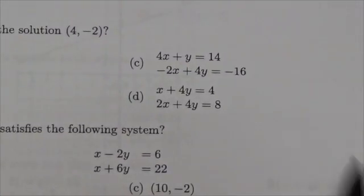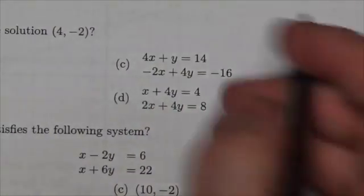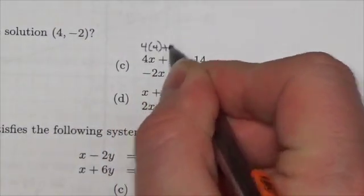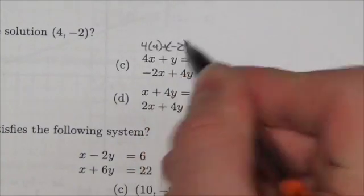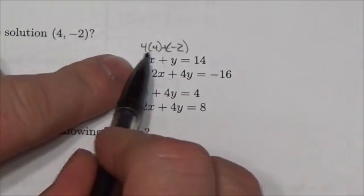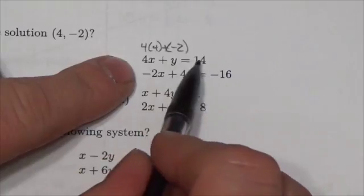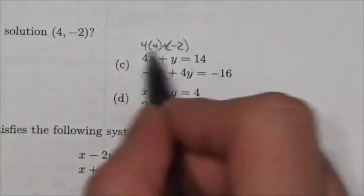Let's keep looking. So over here, this would be 4 times 4 plus, here we go, negative 2. Well there we go. Now 16 and negative 2 is going to be 14. Good, good. So that satisfies that first equation.